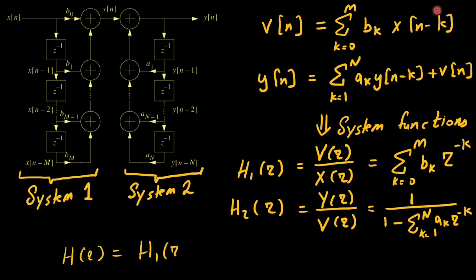Now the overall system function h of z is simply the multiplication of these two systems that is system 1 and system 2. And they are h1 of z and h2 of z. But each system is LTI and we are assuming initial rest condition. And hence it can commutate. That is the system function can be expressed as a multiplication of h2 of z with h1 of z.